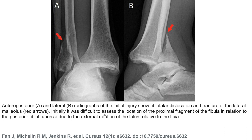This is the second example of the Bosworth fracture. The image on the left is the AP view, and the image on the right side is the lateral view, showing tibiofibular dislocation and fracture of the lateral malleolus.